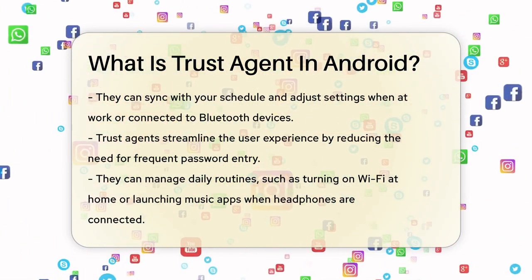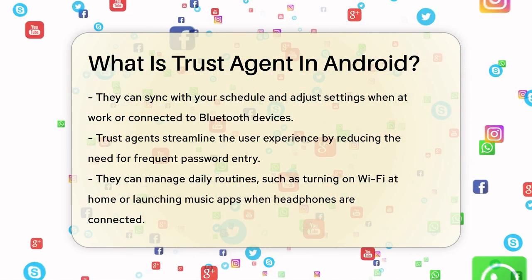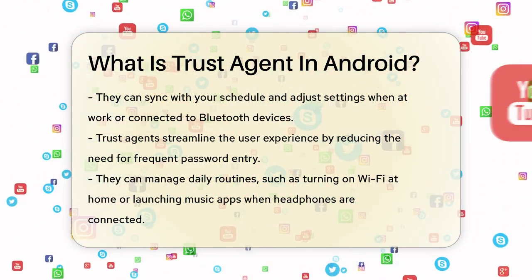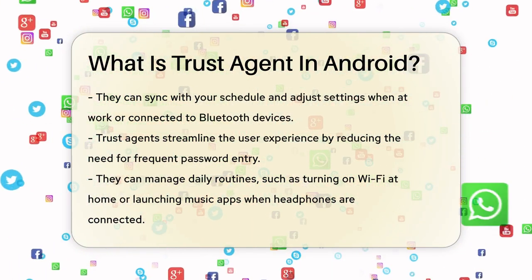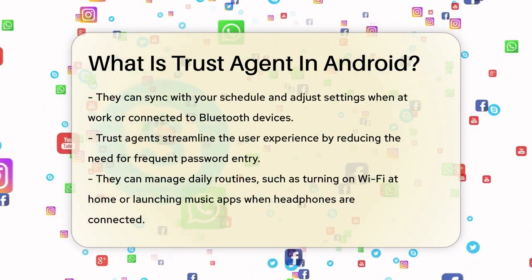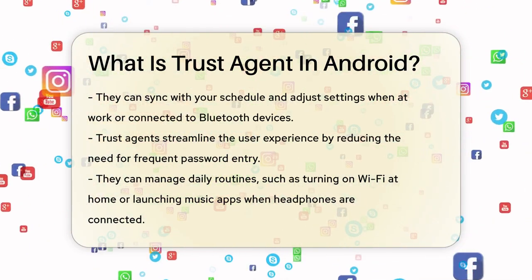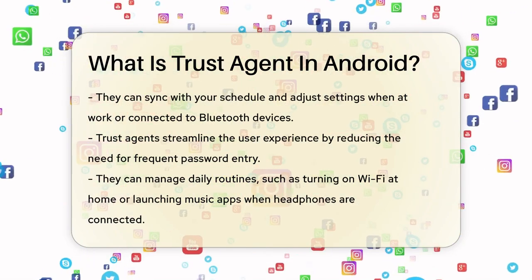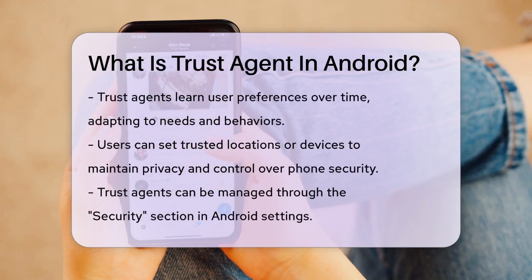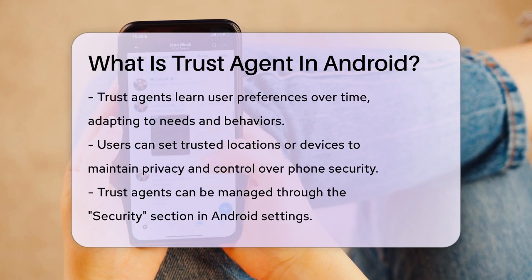This makes your phone experience more seamless and convenient, as you don't have to constantly enter passwords or PINs. Another benefit of Trust Agents is their ability to fit into your daily routine. They can turn on Wi-Fi when you're at home, start your music app when you plug in your headphones, or even adjust power settings to save your battery life. This means your phone gets smarter over time, understanding what you need and when.